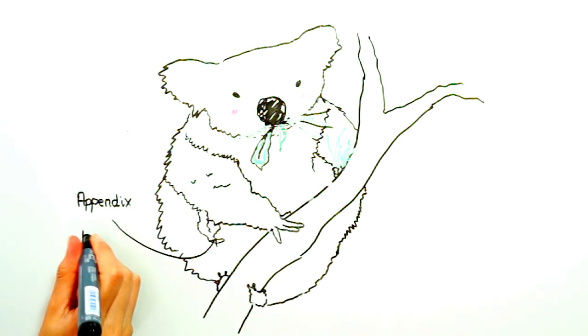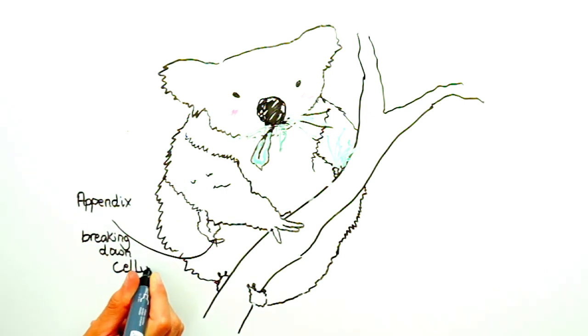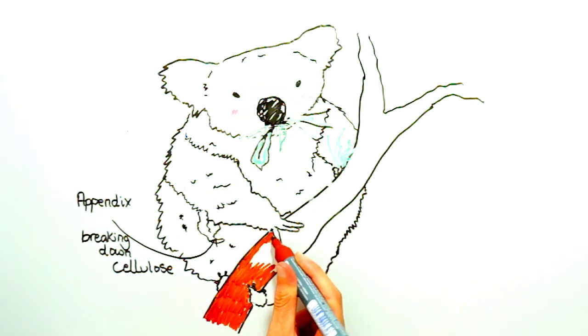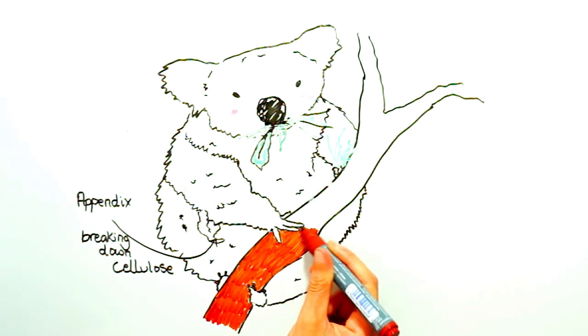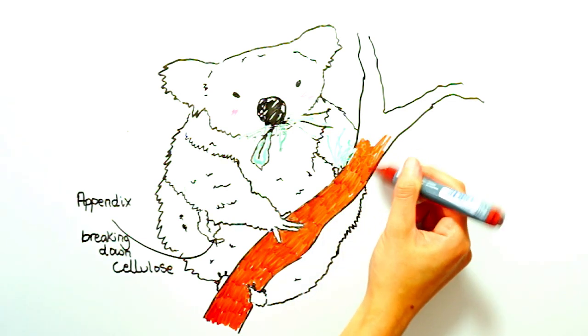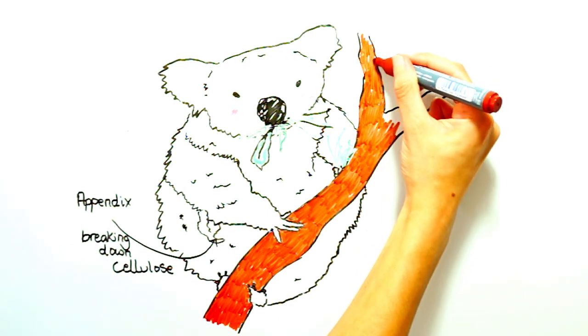This theory is supported by the fact that some purely herbivorous animals such as a koala bear have very large appendix-like structures which house specialized bacteria that can break down cellulose. And the fact that the appendix is attached to the large intestine suggests its role is related to the digestive system somehow.